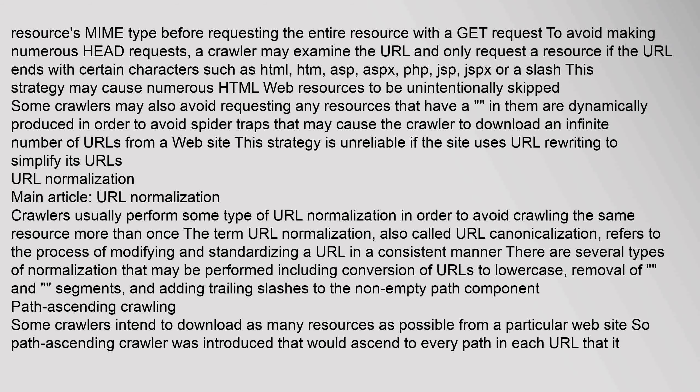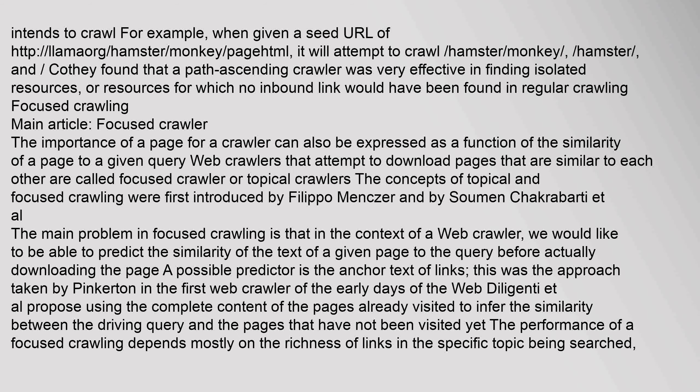Some crawlers intend to download as many resources as possible from a particular website, so a path-ascending crawler was introduced that would ascend to every path in each URL it intends to crawl. For example, when given a seed URL of http://llama.org/hamster/monkey/page.html, it will attempt to crawl /hamster/monkey/, /hamster/, and /. This was found to be very effective in finding isolated resources or resources for which no inbound link would have been found in regular crawling.